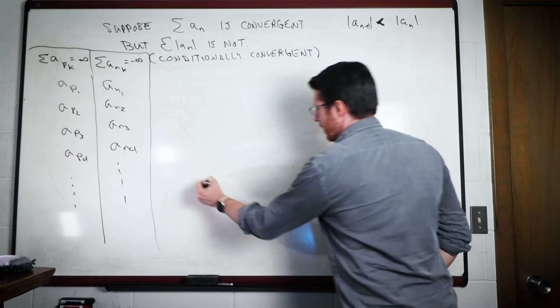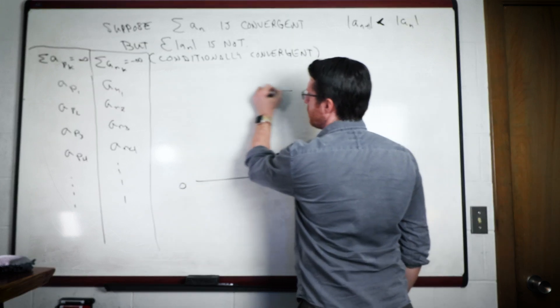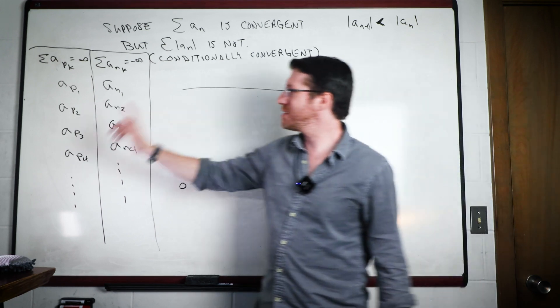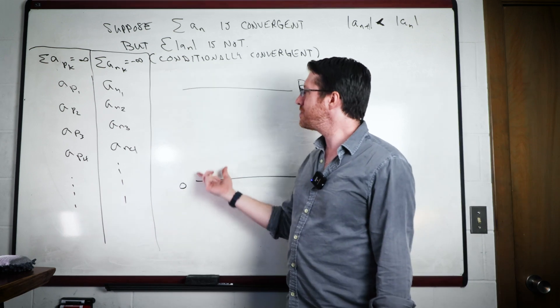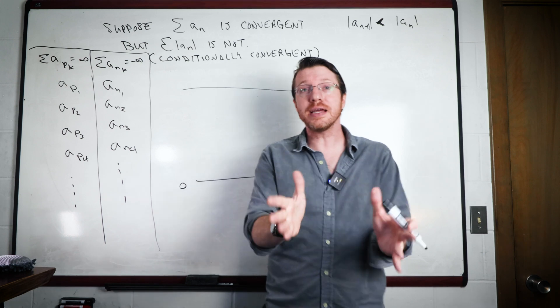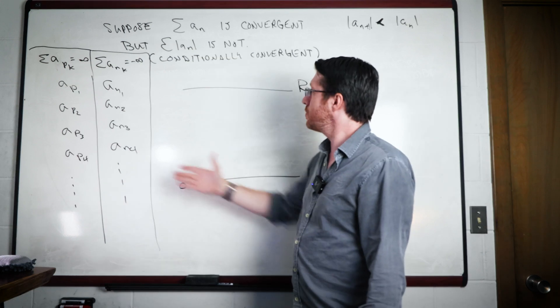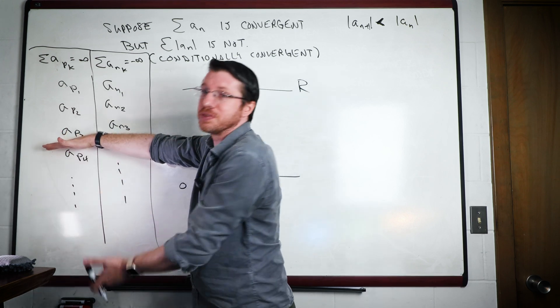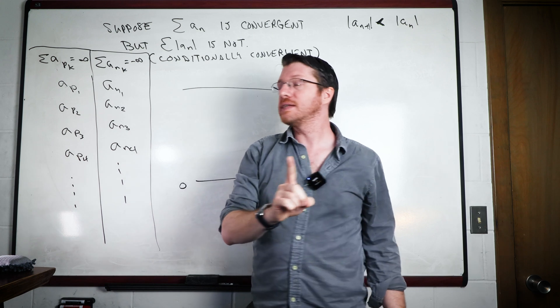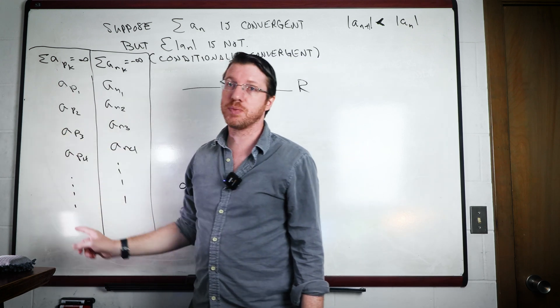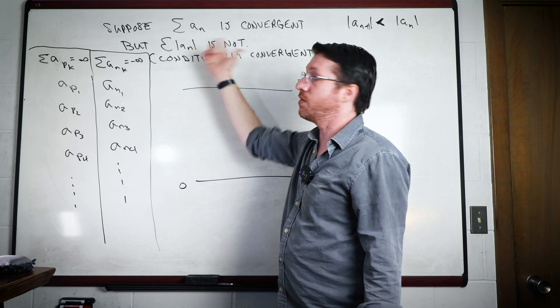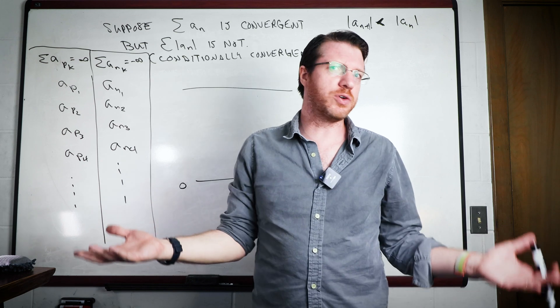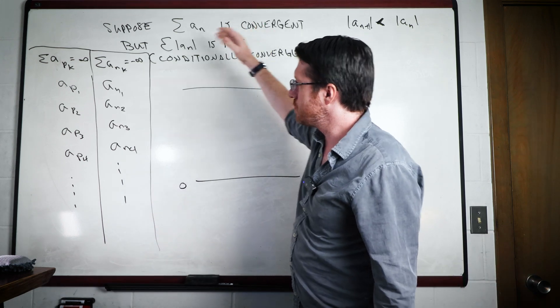It says basically, if we take a look at the real numbers, and we pick some number r, and we would like to get to r, then what we can do is we can take our positive numbers, and we're starting at zero, and we're going to add them together until we get past r. We know eventually we can get past r, because we know this adds to infinity. But one other thing is we know that these terms have to be getting smaller.